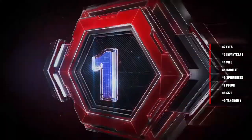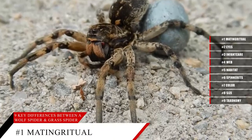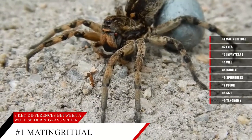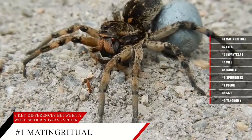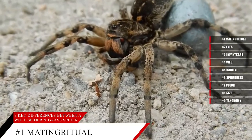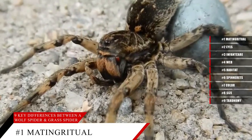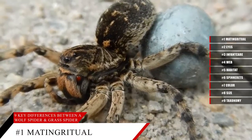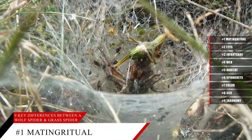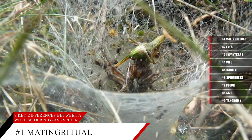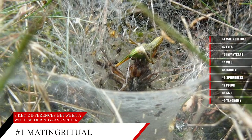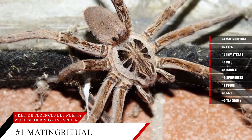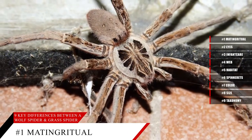Difference Number 1 – Mating Ritual. Many spider species take part in elaborate and unique mating rituals. These displays often end gruesomely, usually with the female eating the male. In the case of wolf spiders, rituals vary depending on the species. However, a common ritual involves the male drumming their legs to the ground and showing off enlarged bristles on their legs. Meanwhile, grass spiders prefer to sway their abdomens from side to side during the courtship ritual, releasing pheromones in hopes of attracting a mate.